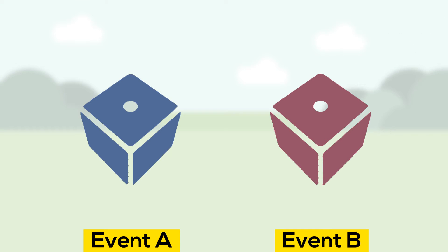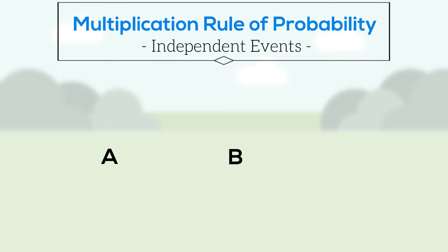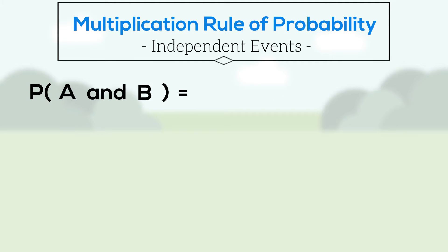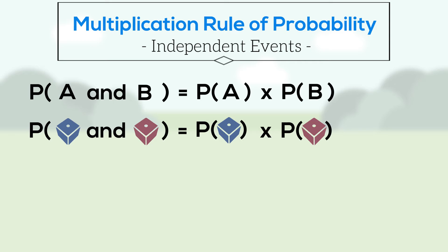The multiplication rule of probability says that the probability of two events, A and B, happening together is the probability of event A multiplied by the probability of event B. In this case, the probability of rolling a one on the first die multiplied by the probability of rolling a one on the second die.